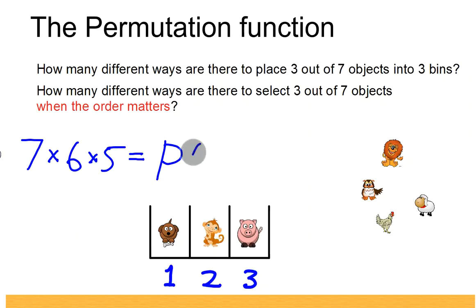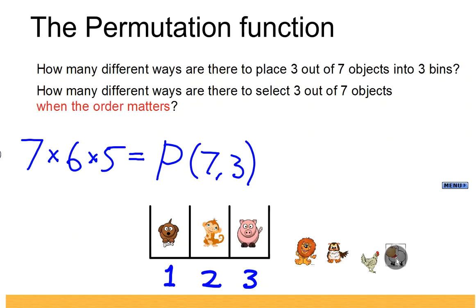So that is equal to the permutations of 7 choose 3, P(7,3). That's the notation we use for that. We can also write it quite nicely using the factorial. Let me make some space. We can write it in the following way: this is equal to 7 times 6 times 5, and then we multiply it times 4 times 3 times 2 times 1.